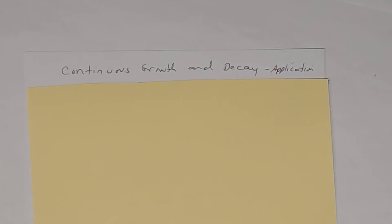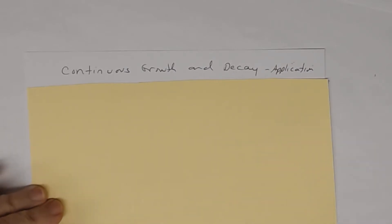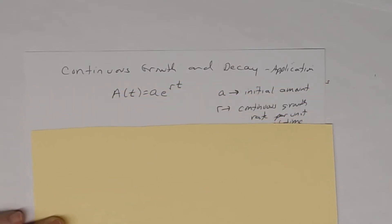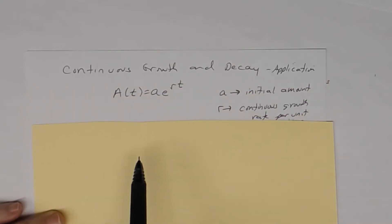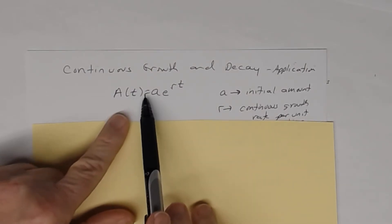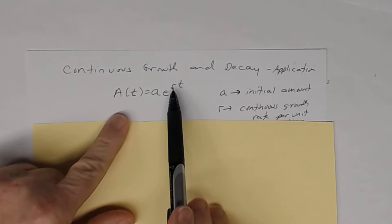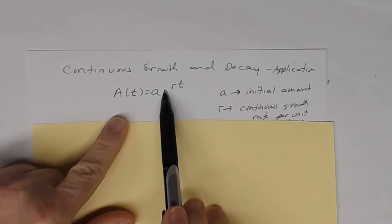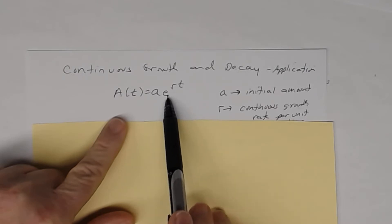In this lesson we're going to look at continuous growth and decay applications. There's really one major formula but we're going to look at it in two different ways. The formula looks like this: A(t) = A times e to the rt. Remember, e is an irrational number approximately equal to 2.718.